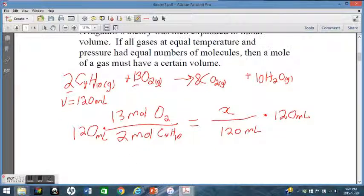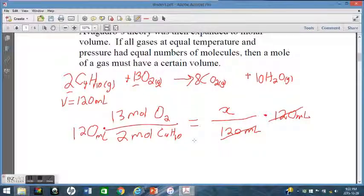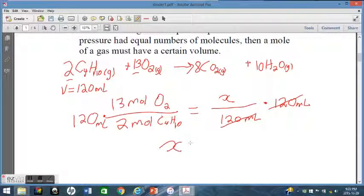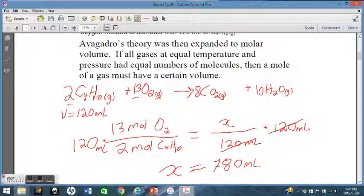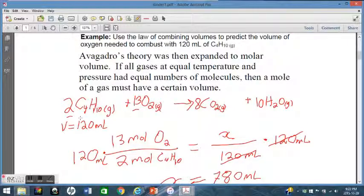We punch those numbers in, realizing of course, the 120 on the top, 120 on the bottom. X equals, we punch our numbers in, 120 times 13, divide that number by 2. We're going to require 780 milliliters of oxygen in order to burn completely 120 milliliters of C4H10.